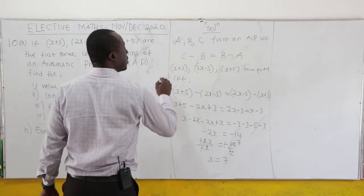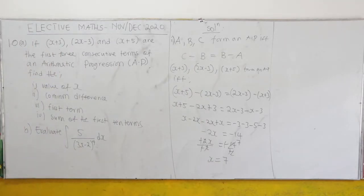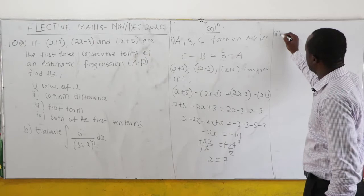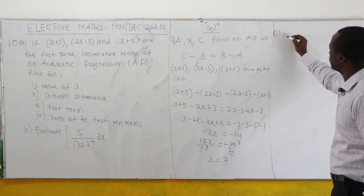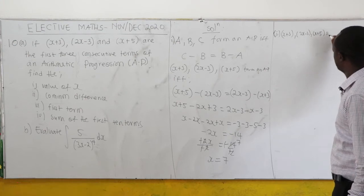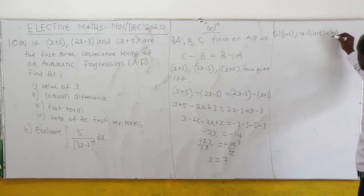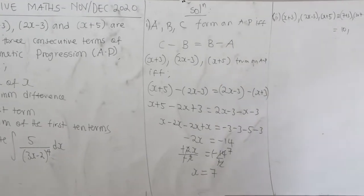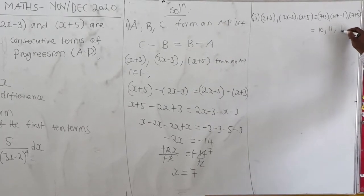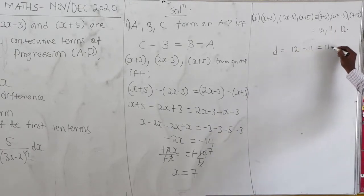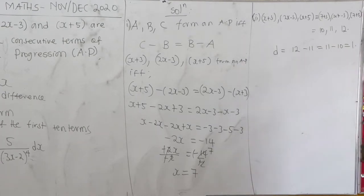So x equals 7. The sequence becomes: x plus 3 equals 10, 2x minus 3 equals 14 minus 3 equals 11, and x plus 5 equals 12. The common difference D equals 12 minus 11 equals 11 minus 10 equals 1.